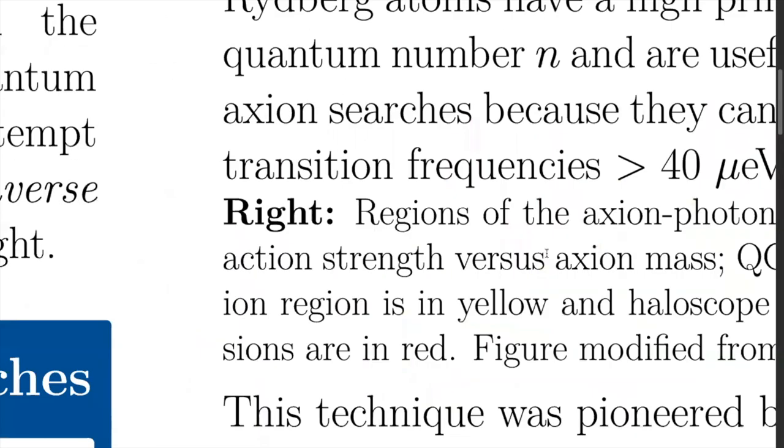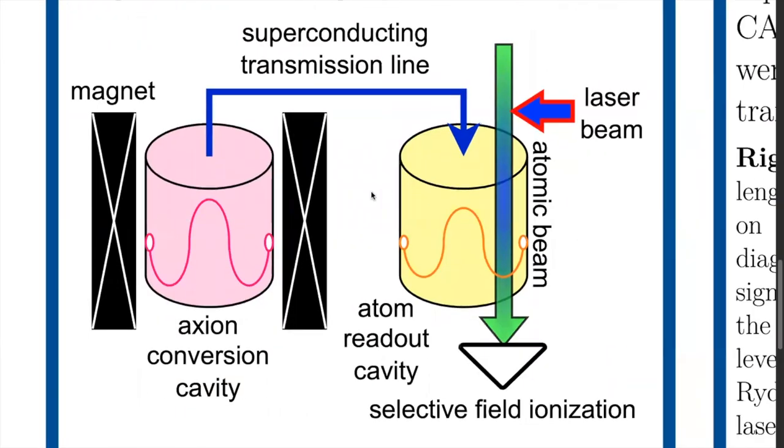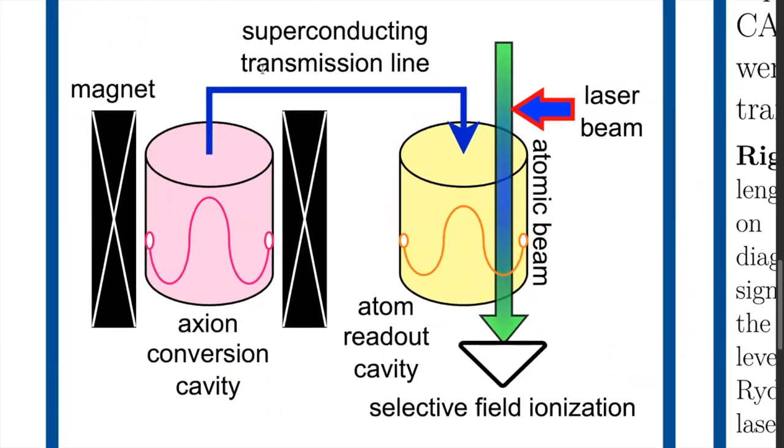So our setup is an expansion on the idea of a standard haloscope, except that instead of reading the cavity out directly, we would be coupling this output to another resonator to be read out with Rydberg atoms.